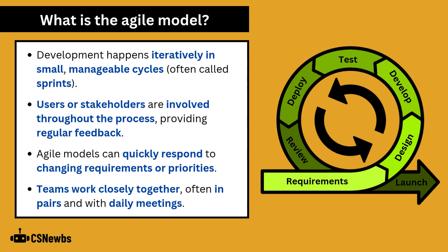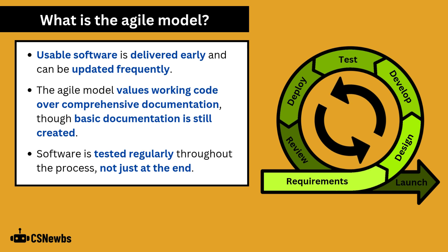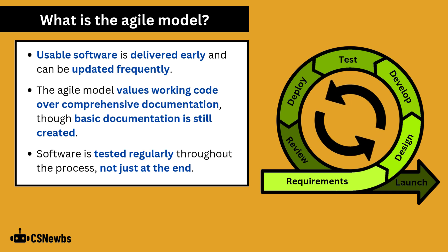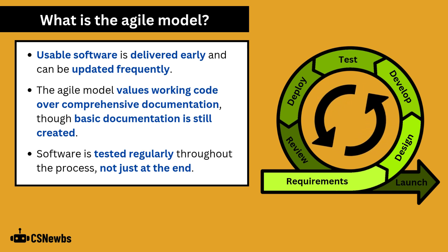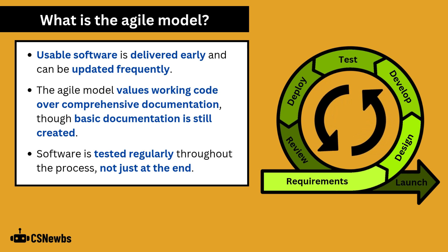Teams often hold daily meetings. Usable software is delivered early and can be updated frequently. The Agile model values working code over comprehensive documentation, although some basic documentation is still created, and software is tested regularly throughout the process, not just at the end.